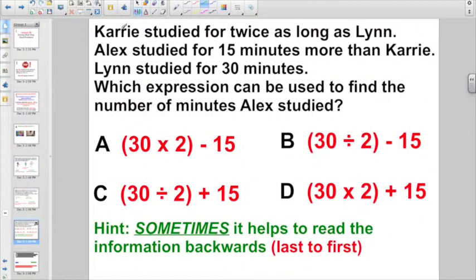Check out this one. Carrie studied for twice as long as Lynn. Alex studied for 15 minutes more than Carrie. Lynn studied for 30 minutes. Which expression can be used to find the number of minutes Alex studied? And here's one little hint. Sometimes it helps to read the information backwards, last to first. So, which expression can be used to find the number of minutes Alex studied? We know that Lynn studied for 30 minutes, right? So, while we're trying to do this, she studied for 30 minutes. Let's put a little L up on each one. We got a 30 in each one of these expressions. This is what they're saying. Lynn studied for 30 minutes. So, this must be the Lynn they're talking about, right?